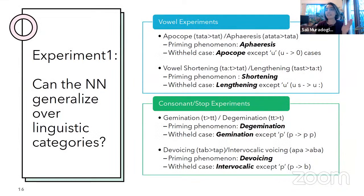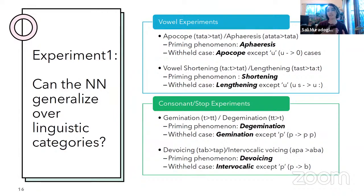Perhaps the more interesting thing from that baseline is whether neural networks can generalize over linguistic categories. We split this experiment into two parts. The first is whether they can recognize certain characters as vowels — the vowel experiments. The setup uses a priming case and a withheld case. In the priming case, for apheresis, all five vowels appear in the training set. For the withheld case — apocope — we have all vowels except U. So you basically have two phenomena to train on in this model.